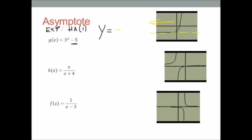So my horizontal asymptote in this case is y equals negative 5. All right, let's go to the second one. This is a rational function. I know it's rational because there's an x in the denominator.